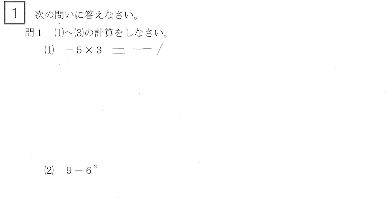So there's 1 minus, and 5 times 3 is 15. We need to deal with the exponent first. 9 minus 36, which is equal to minus 27.